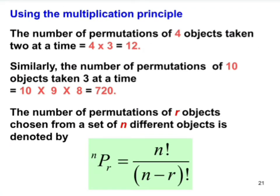We can use the multiplication principle. For example, the number of permutations of four objects taken two at a time is 4 × 3 = 12. If we have 10 objects and want to take three at a time, we start with 10 × 9 × 8, giving us 720.